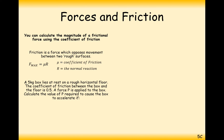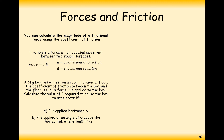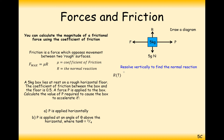Let's have a go at another question. A 5 kilogram box lies at rest on a rough horizontal floor with a coefficient of friction of 0.5. A force P is applied to the box. We need to calculate the value of P required to cause the box to accelerate, first when P is applied horizontally, then when P is applied at an angle where tan θ equals 3 over 4.